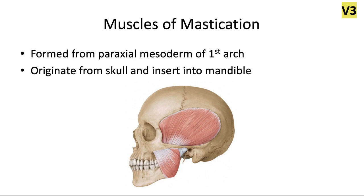They're formed from the paraxial mesoderm of the first pharyngeal arch — the mesodermal tissue that develops on either side of the neural tube in the embryo, and as we talked about in our second video, it's also responsible for forming the posterior skull. Since they come from the first pharyngeal arch, these muscles are innervated by the trigeminal nerve, cranial nerve 5, specifically the third division. All of the muscles of mastication originate from the skull somewhere other than the mandible, and they insert into the mandible to allow it to move.